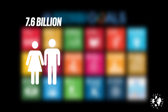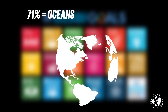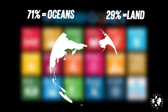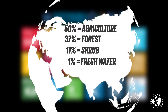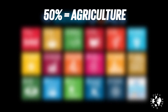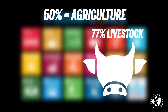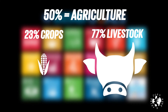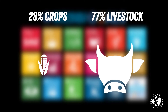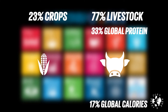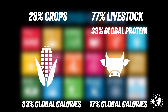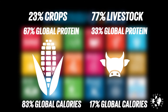Right now there are 7.6 billion people but about 24 billion livestock animals worldwide. 71% of the earth is covered in oceans, leaving 29% as habitable land. Of that habitable land, 50% is used for agriculture, 37% is forest, 11% is shrub, and that leaves 1% for fresh waterways and urban areas. Of the 50% of agricultural land, 77% is used for livestock and only 23% for human consumption crops. But the 77% of land for livestock yields only 17% of the total calorific supply to humans and only 33% of the total protein, whereas the 23% of land used for crops yields 83% of the total calorific supply and 67% of the protein supply.